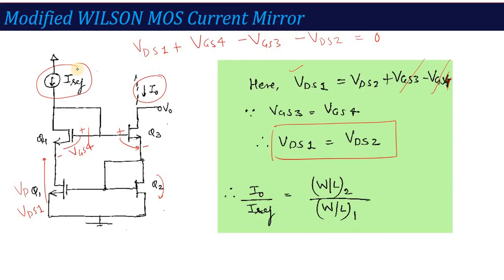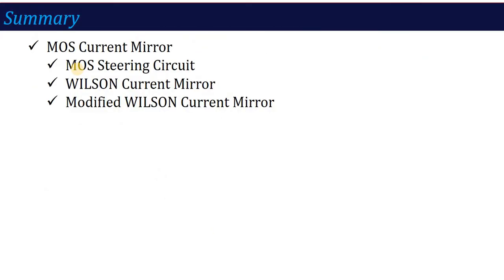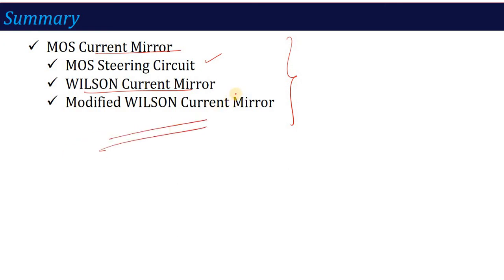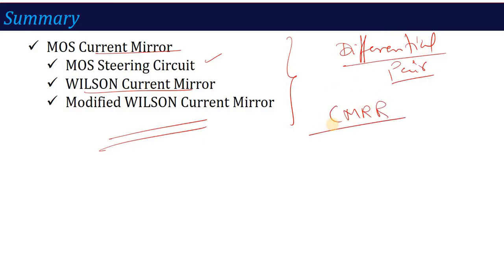I hope it is clear what the Wilson MOS current mirror is, what the basic MOS current mirror is, and what the modified Wilson current mirror is. With this lecture, the current mirror concept is complete — we have seen BJT current mirror, MOS current mirror, current steering circuit, and the modified Wilson current mirror. From the next lecture, we will discuss the differential amplifier using MOS and BJT, covering modes of operation and how to calculate CMRR — common mode rejection ratio. Stay with me and see you in the next lecture. Thank you.